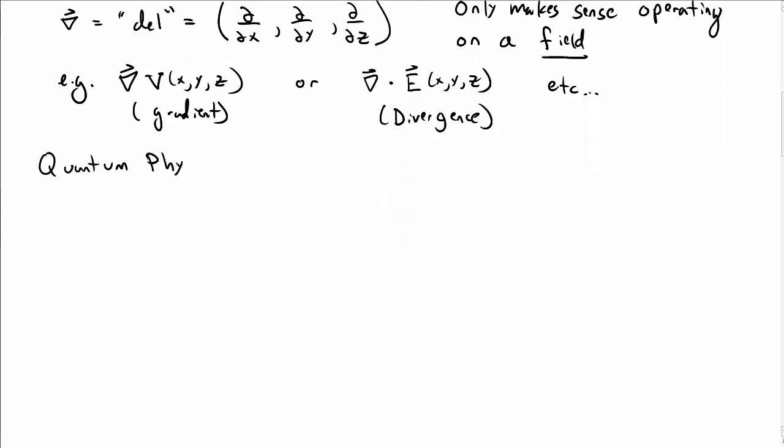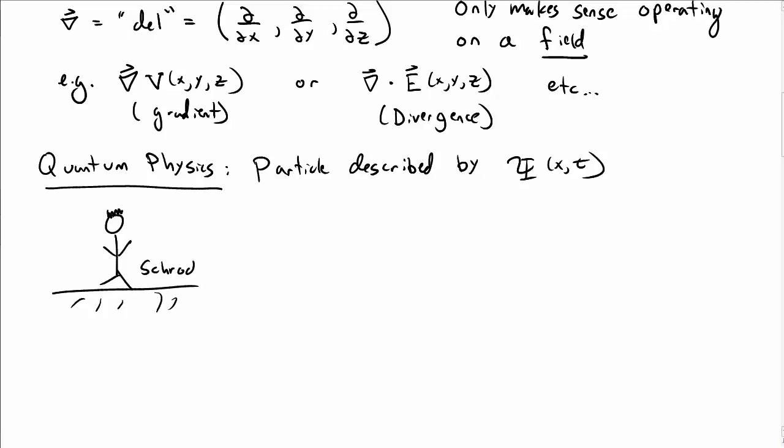Okay, so now let's talk about operators in quantum physics. So now, when we describe a particle, we describe it by a wave function, capital psi of x and t. So if you were Schrodinger, okay, so this is Schrodinger,